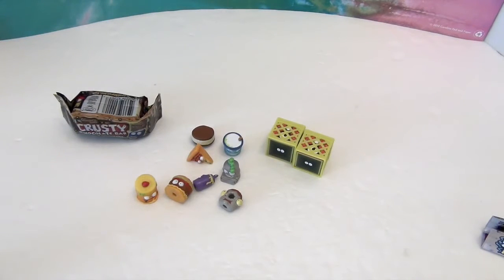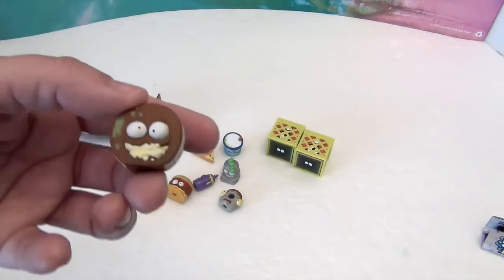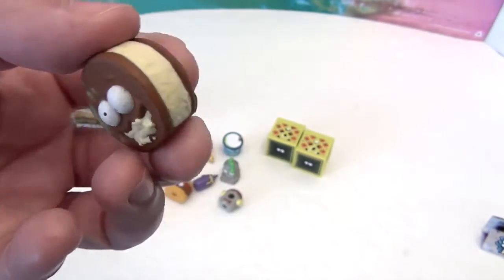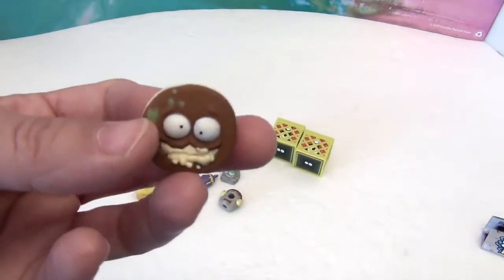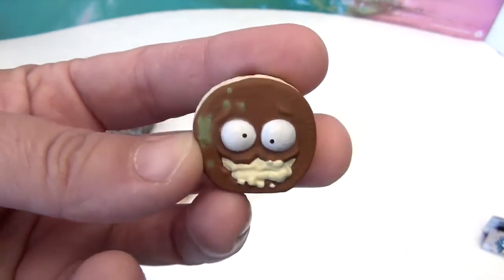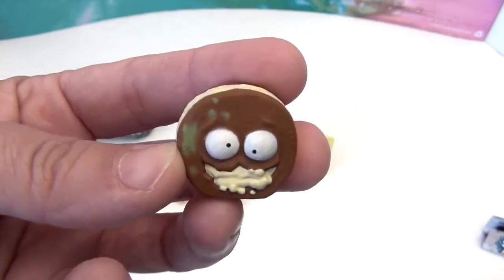Here we go. This is Barf Biscuit. Barf Biscuit Blurt. He does look like an Oreo, which I don't know, maybe they call them that in Australia. They call cookies biscuits.